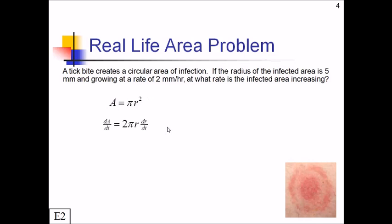So that's dA over dt equals 2 pi r dr over dt. Now we have to find the various things that we're missing. We're looking for dA over dt, so we need r and dr over dt. r itself is going to be 5 millimeters. And dr over dt, that's the rate of the radius which it's growing. That's going to be 2 millimeters per hour.